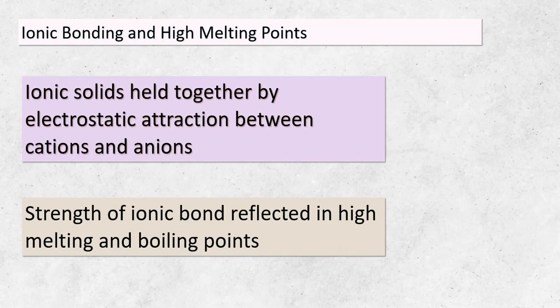Today, we're delving into the captivating realm of ionic bonding and its impact on the remarkable characteristics of ionic compounds. Within ionic solids, the binding force is the remarkable electrostatic attraction between positively charged cations and negatively charged anions — these attractions create what we call ionic bonds. What makes these compounds truly exceptional is their remarkable melting and boiling points, which stand as a testament to the sheer strength of these ionic bonds. The strength of an ionic bond is intricately linked to the charges and sizes of the ions involved.